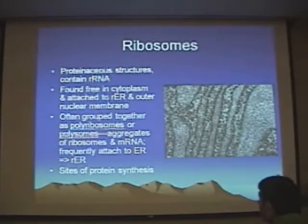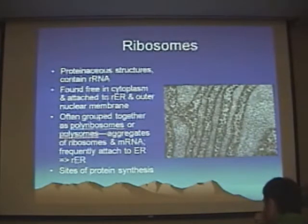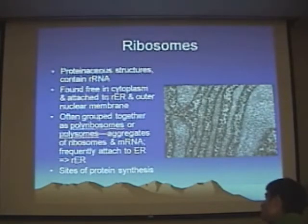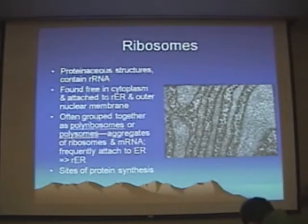Sometimes these ribosomes will actually clump together in big balls. When they do that, they're called polyribosomes — just because poly means many. There's really nothing special about that; it just means it's a really big site of protein synthesis. It's very active — it's making lots of protein.